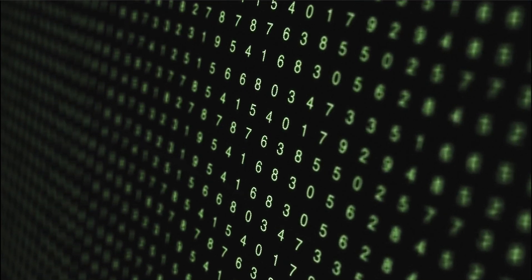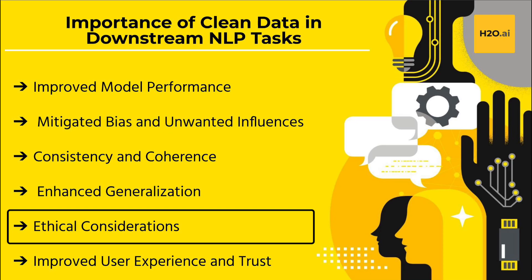Fourth, enhanced generalization: cleaning the data helps the model generalize better to new or unseen examples. By removing irrelevant or noisy data, the model can focus on learning robust and transferable patterns, improving its ability to handle diverse inputs in real-world scenarios. Fifth, ethical considerations: cleaning the data allows for the removal of offensive, hateful, or inappropriate content. Models trained on such data can generate responses that promote harmful behavior or propagate misinformation. By ensuring the data is free from offensive or unethical content, the risks of the model generating undesirable or harmful outputs can be mitigated.